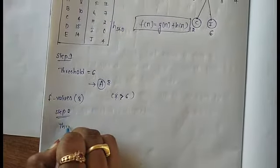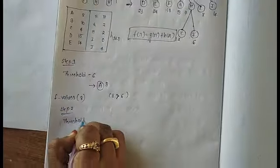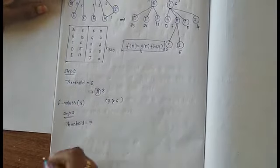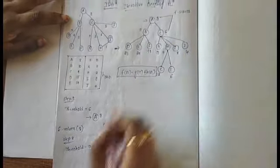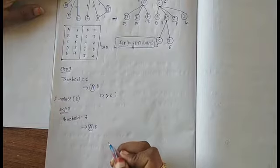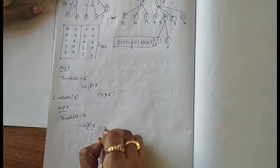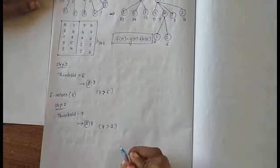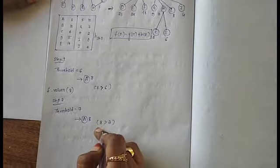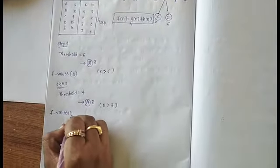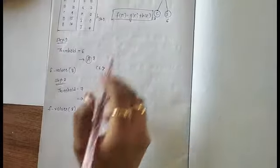Step 2: threshold value is 7. We consider the threshold value as 7 and expand the nodes. The F-score at this point is 8. Again we compare — the F-score value of 8 is greater than our threshold of 7. So in the next step we increase the threshold value to 8.